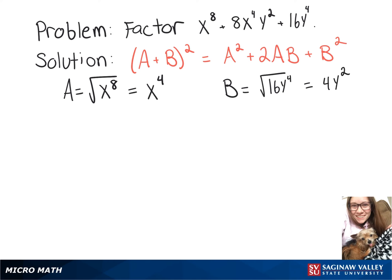And just to make sure that this works, let's do 2 times A times B. So 2 times x to the 4th times 4y squared. And that does end up giving us 8x to the 4th y squared.